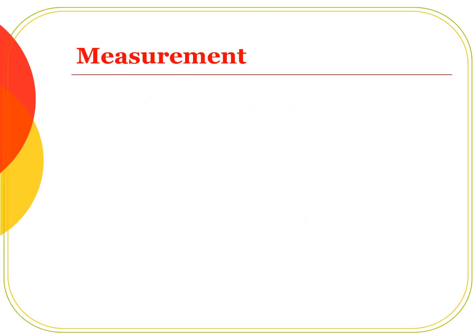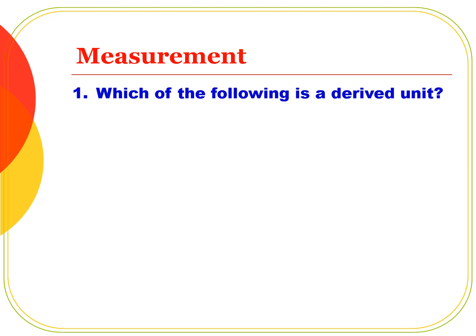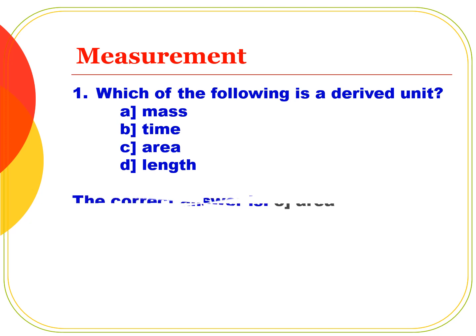First question: Which of the following is a derived unit? Option A: Mass. Option B: Time. Option C: Area. Option D: Length. The correct answer is Option C, Area. Mass, Time, and Length are fundamental units.